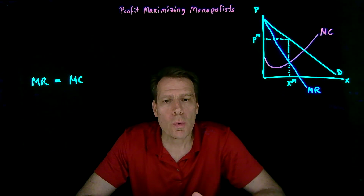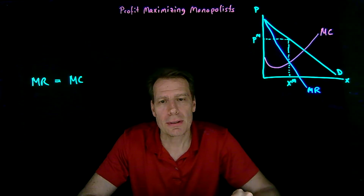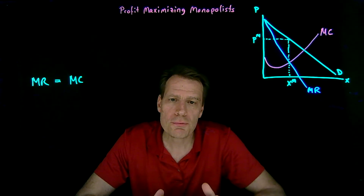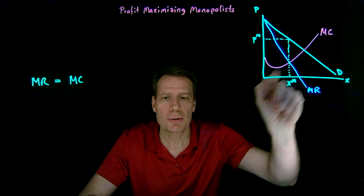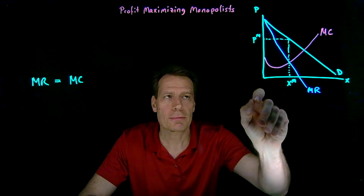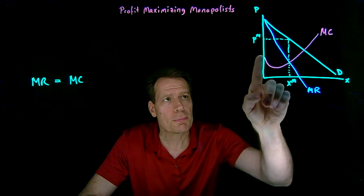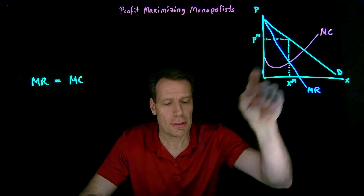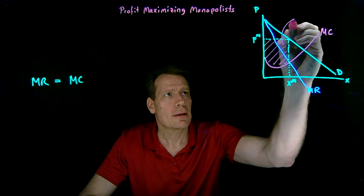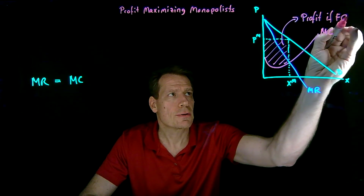We can also see in that picture where the profit for the monopolist lies if there are no fixed costs. There's nothing in the picture that tells us anything about fixed costs, because marginal costs don't contain fixed costs. But if there are no fixed costs, then the marginal cost curve tells us all of our costs. To figure out the total cost, we would just take the area underneath the marginal cost curve — the cost of the first unit, the additional cost of the second unit, the third unit, and so forth. When we subtract that area from our total revenue box, we get this area — the monopolist's profit if fixed costs are zero.